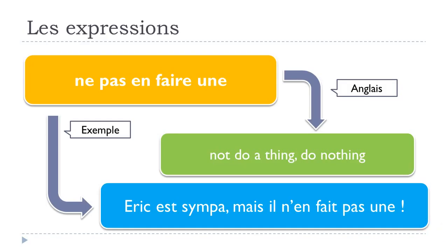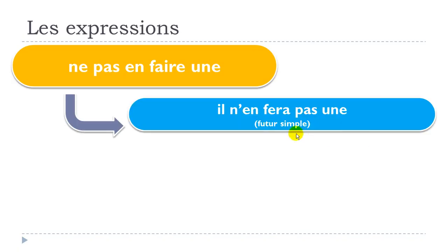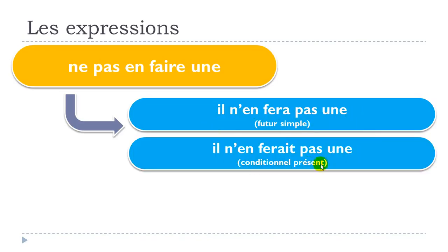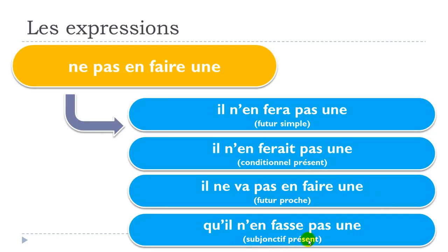Let's see how you would conjugate this expression at different tenses. Future simple: il n'en fera pas une. Conditionnel présent: il n'en ferait pas une. Future proche: il ne va pas en faire une. Subjonctif présent: qu'il n'en fasse pas une.